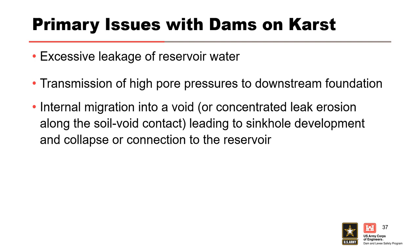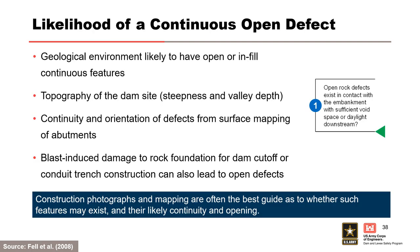The three primary issues with karst are excessive leakage of reservoir water, transmission of high pore pressures to the downstream foundation, and internal migration into a void or concentrated leak erosion along the soil-void contact leading to sinkhole development and collapse or connection to the pool. When evaluating the first node of the event tree, consider: whether the geological environment is likely to have open or infilled continuous features, the topography of the dam site, the steepness and valley depth, the continuity and orientation of defects from surface mapping of the abutments, and whether blast-induced damage may have created open defects. Construction photographs and mapping are often the best guide for assessing whether such features exist and their likely continuity and opening.